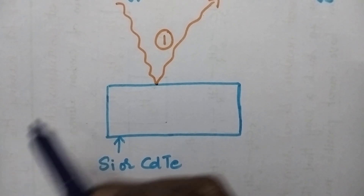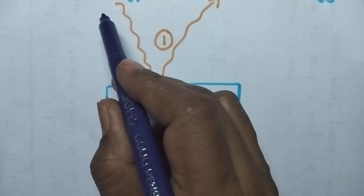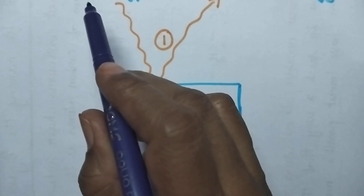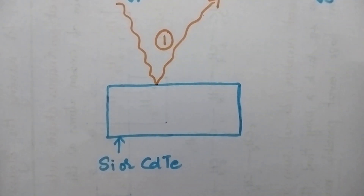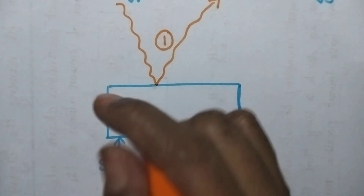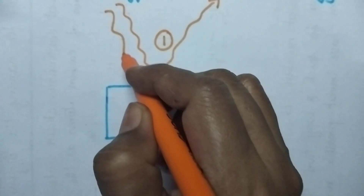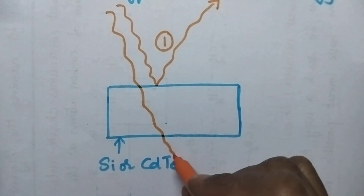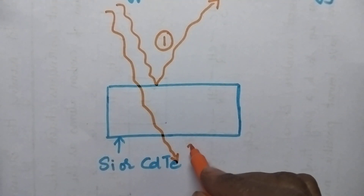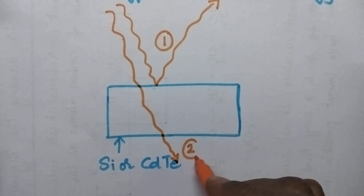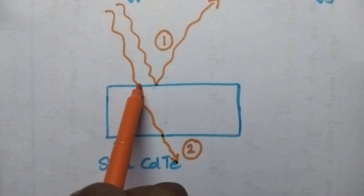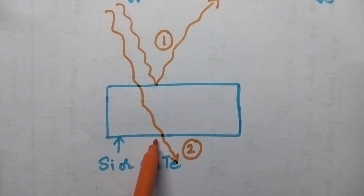At the same time, whenever a solar radiation hits the photovoltaic cell, then it may be transmitted through the photovoltaic cell. That is the second possibility — the solar radiation can be transmitted through the photovoltaic cell.